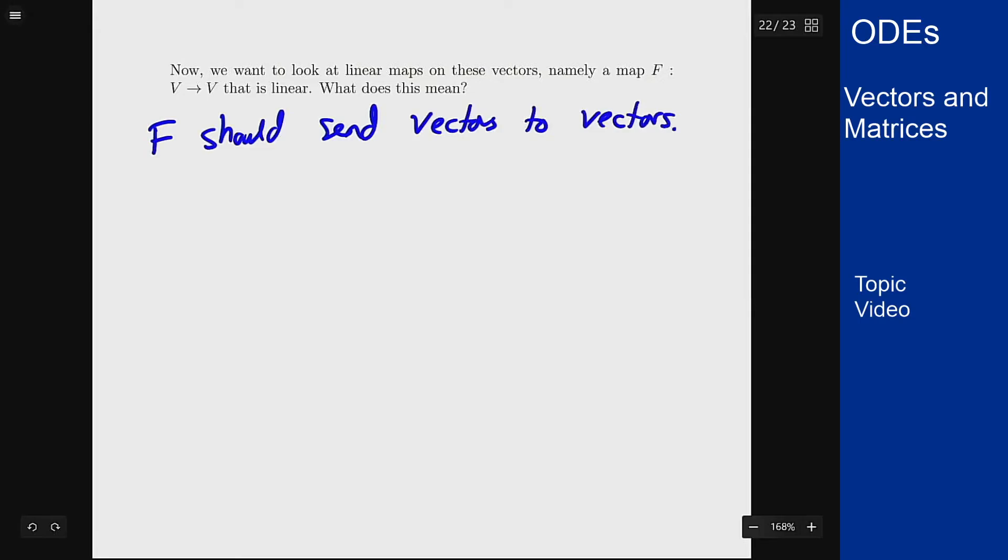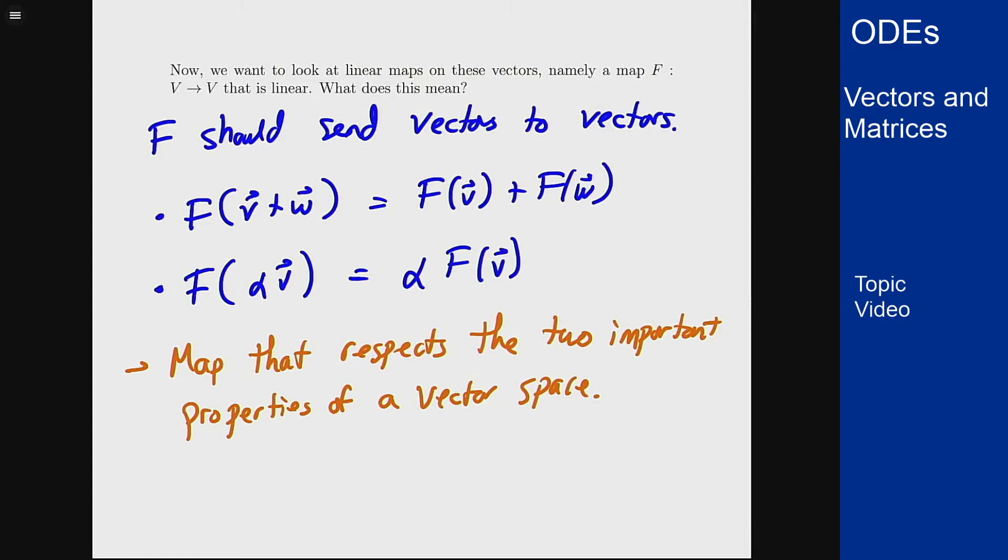Well that means if I look at f of a sum, it should respect that sum. If it's linear it should be able to write this as the map of v plus the map on w. If I have the linear function 2x, if I plug in double the initial value or the sum of two things, I'll get the sum as the answer. And similarly I want it to respect scalar multiplication. So f of alpha times v for some real number alpha is alpha times f of v. Basically I want a map that respects the two important properties of a vector space: that I can add vectors and multiply by scalars. Both are respected by this map.